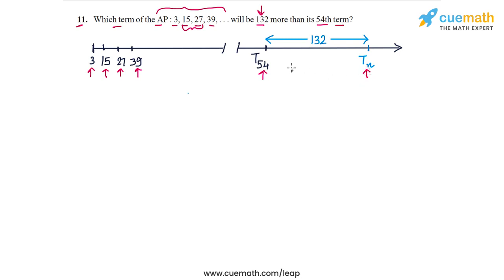We need to find out that term which is 132 more than the 54th term. In other words, we need to find out the index of this term, so we need to find n. We know the common difference of this AP is equal to 12, because the difference between any pair of successive terms is 12, so D equals 12.